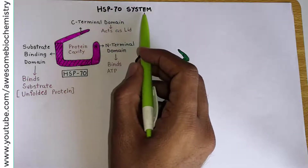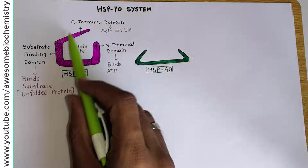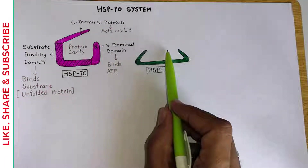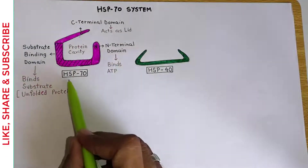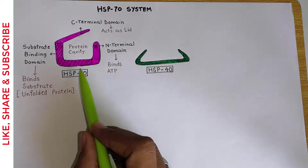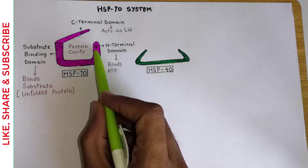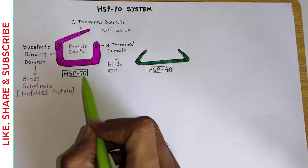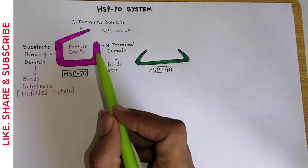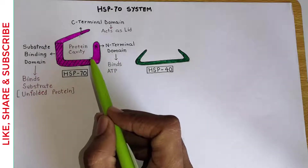The HSP70 system has two major components. One is the HSP70 protein and the second one is the HSP40 protein. This HSP70 protein is also known as a chaperone. As you can see in the structure, HSP70 is made up of a single polypeptide chain, so that means it is a monomeric protein.